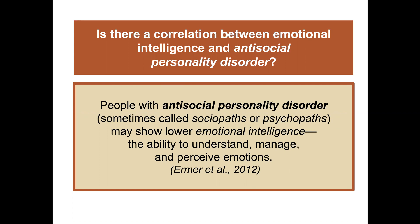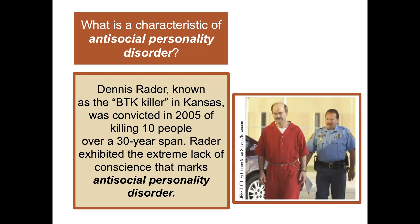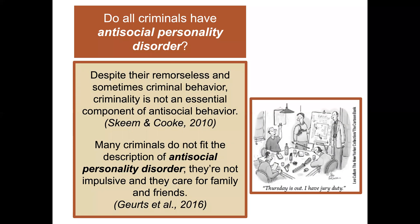People with antisocial personality disorder are sometimes called sociopaths or psychopaths, though those are not official psychological terms. They may show lower emotional intelligence — the ability to understand, manage, and perceive emotions. Dennis Rader, known as the BTK killer in Kansas, was convicted in 2005 of killing 10 people over a 30-year span, exhibiting the extreme lack of conscience that marks antisocial personality disorder. Importantly, criminality is not an essential component — many criminals do not fit the description of antisocial personality disorder, as they are not impulsive and do care for friends and family.